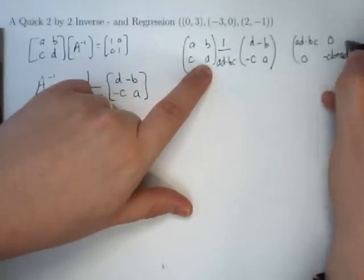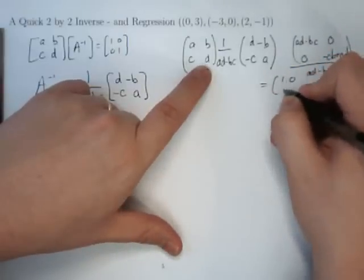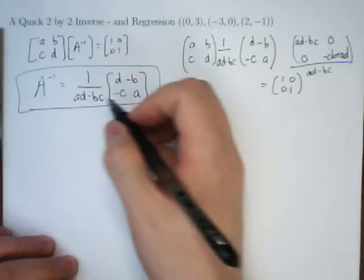If I divide all that by AD minus BC, out pops the identity 1001. So, a simple way to find the inverse.